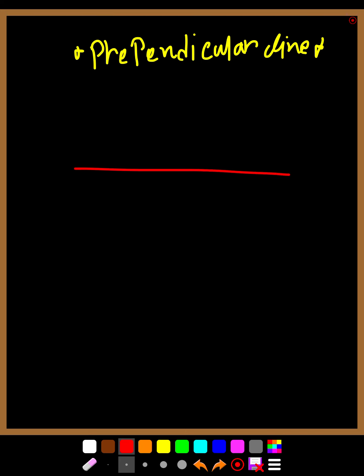What is the meaning of perpendicular? If you have two lines and they are perpendicular, meaning they are making a right angle. This angle will be 90 degrees. That is the meaning of perpendicular lines — the angle between them is a right angle of 90 degrees.